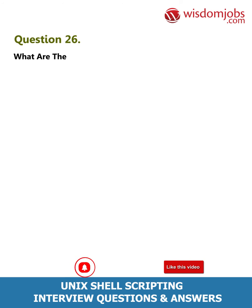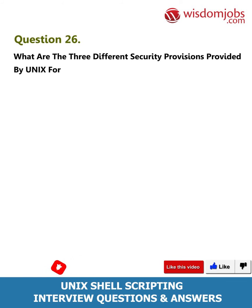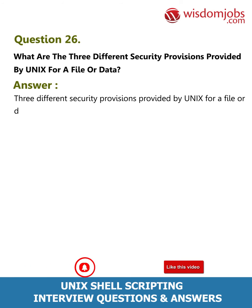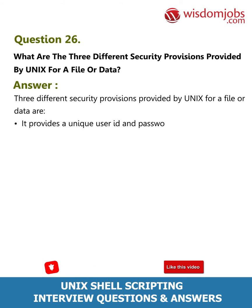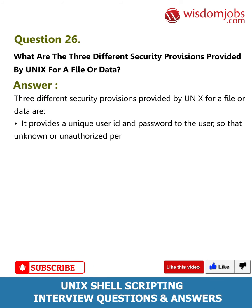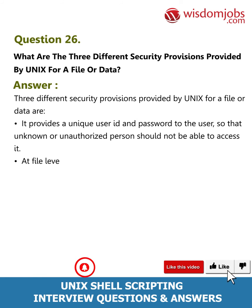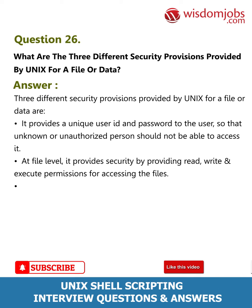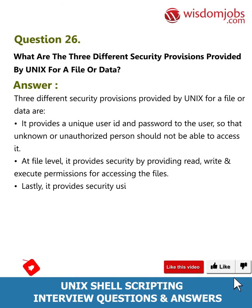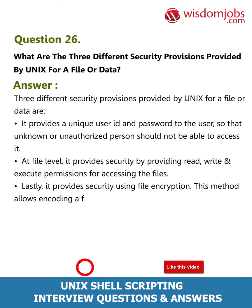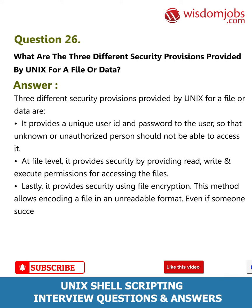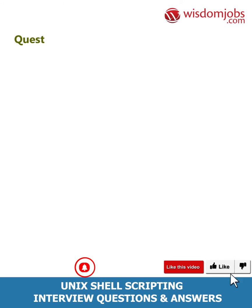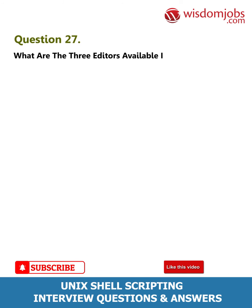Question 26: What are the three different security provisions provided by Unix for a file or data? Answer: The three security provisions are: First, it provides a unique user ID and password so that unauthorized persons cannot access it. Second, at file level it provides security through read, write, and execute permissions. Third, it provides security using file encryption — this method encodes a file in an unreadable format; even if someone opens the file, they cannot read its contents unless it is decrypted.